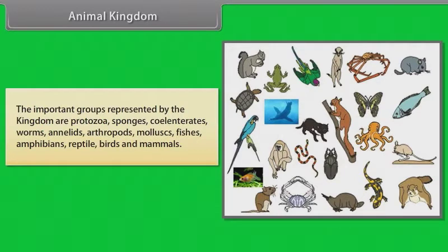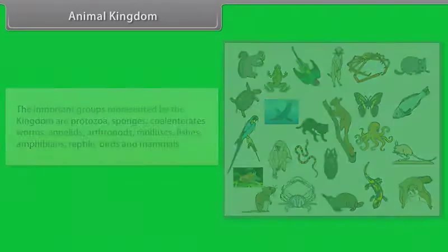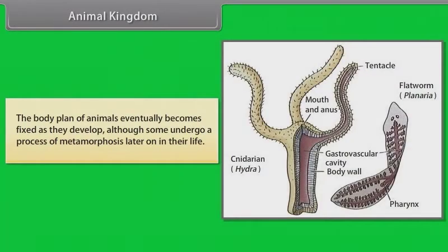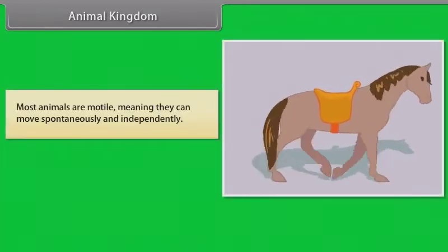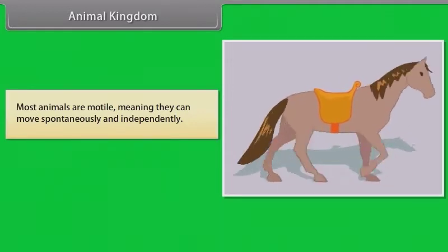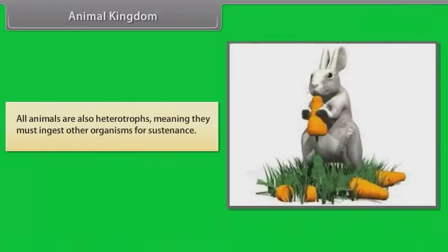Other groups include fishes, amphibians, reptiles, birds and mammals. The body plan of animals eventually becomes fixed as they develop, although some undergo a process of metamorphosis later in their life. Most animals are motile, meaning they can move spontaneously and independently. All animals are also heterotrophs, meaning they must ingest other organisms for sustenance.